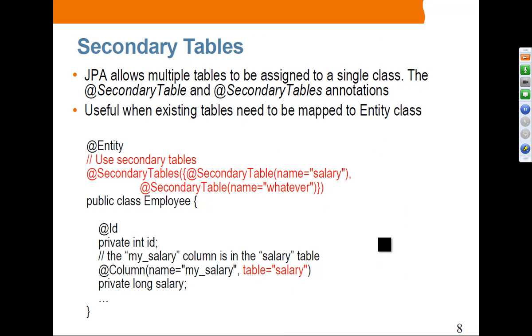The next topic is secondary tables. JPA allows multiple tables to be assigned to a single class. You can use the @SecondaryTable and @SecondaryTables annotations if you have multiple tables. This is useful when you have existing tables and want to map them into a single entity class. For example, the Employee class has fields coming from different tables — we have a secondary table called salary, and the salary field is coming from that salary table. It's a nice way to accommodate existing database table structures.